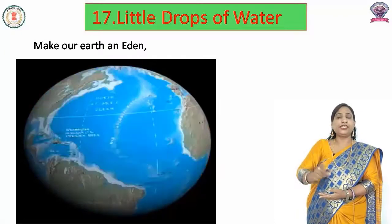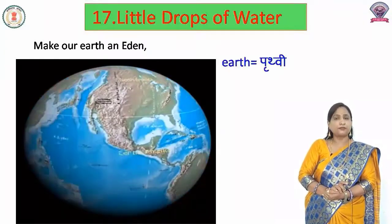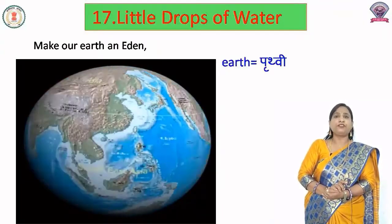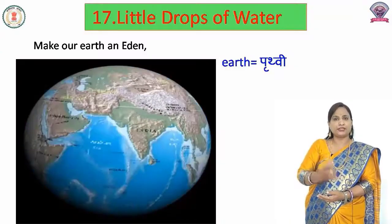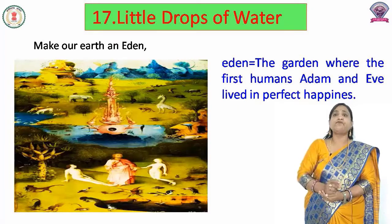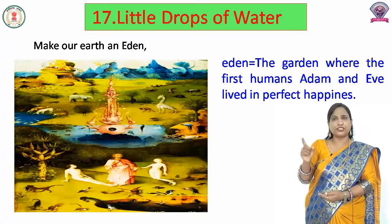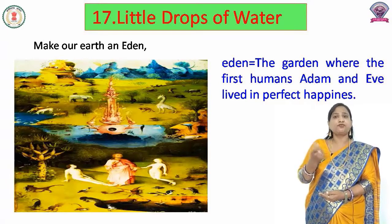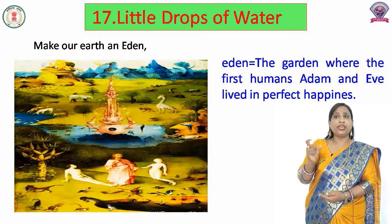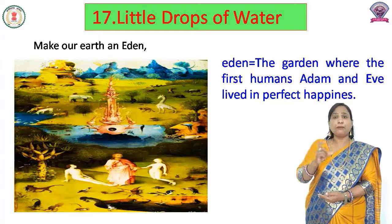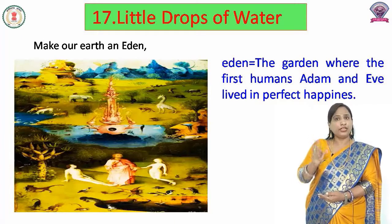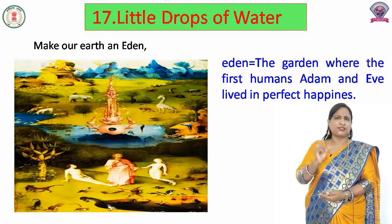...may make our earth and Eden. Yeh dono mil kar humari earth, means prithvi, humari prithvi ko ek Eden ki tara bana sakti hain. Bacho, Eden ka meaning hai: the garden where the first humans, Adam and Eve, lived in perfect happiness. Yeh svarg ka ek bageecha hai jahan par pratham jo manushya paida huye the — Adam and Eve — woh yahan par khushipur wak rehte the. Hamare dayaluta ke karm aur prem ke bol mil kar hamari prithvi ko Eden, yaani svarg ke bageeche ki tara bana sakti hain.